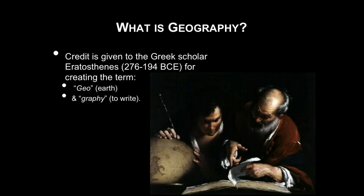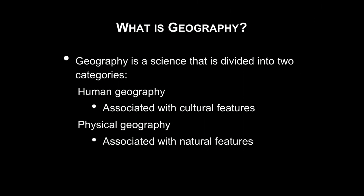Going back a little bit to what we talked about earlier, geography was really coined as a phrase by Eratosthenes, a Greek philosopher and academic who used the Greek terms geo and graphi — essentially meaning 'to write the earth.' It is this idea of a science that intertwines both human characteristics and our interactions with the environment, along with the physical environment of our world. Geography as a science is divided into two different fields.